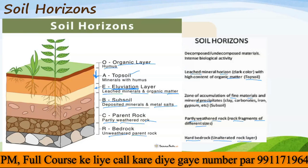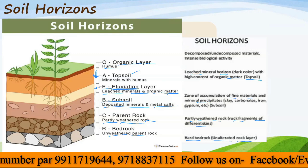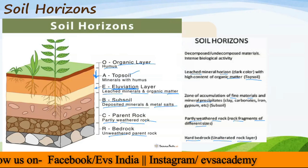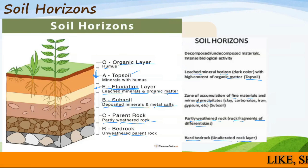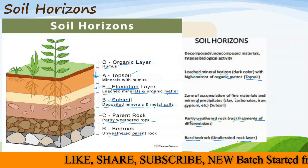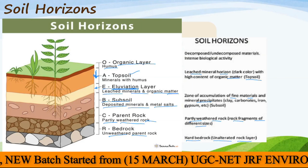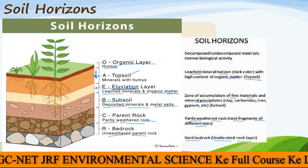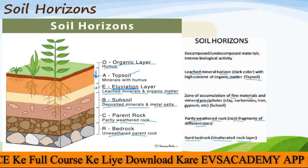These are all the different soil horizons. Exam questions may ask about the different layers or their arrangement. The correct sequence from top to bottom is: O layer → A layer → E layer → B layer → C layer → R layer. They may ask you to arrange them in ascending or descending order, so remember the sequence O-A-E-B-C-R.